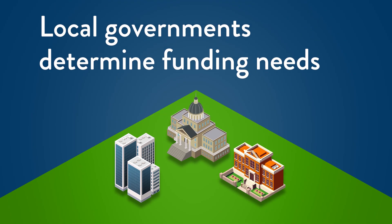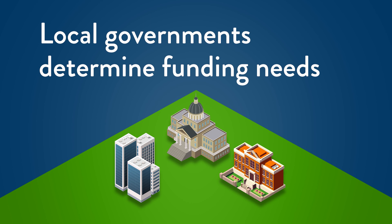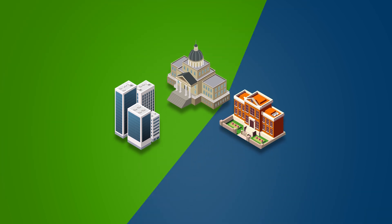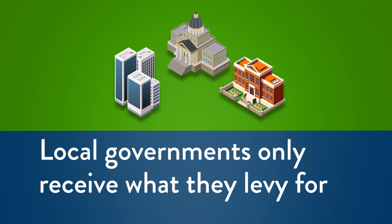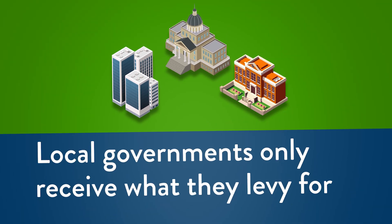Each year, those governments determine their funding needs for the upcoming year. Property tax can be adjusted to control the flow of revenue. Therefore, those local governments only receive what they levy for, with no surplus or deficit.